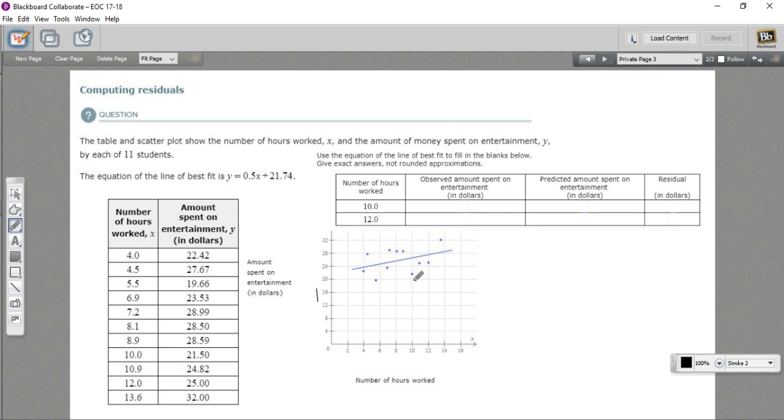The residual is the difference between this line of best fit, what we expect or predict that person to spend, and the actual amount. So you see some of them are above, some of them are below. So for any particular point, we can calculate the residual by just subtracting one from the other.